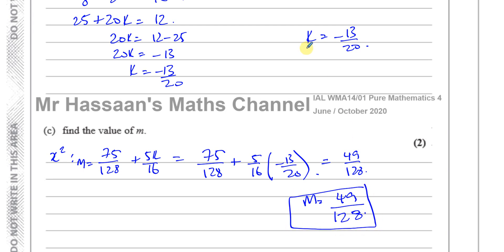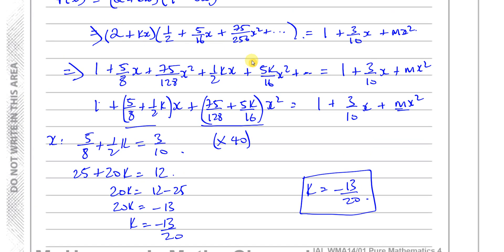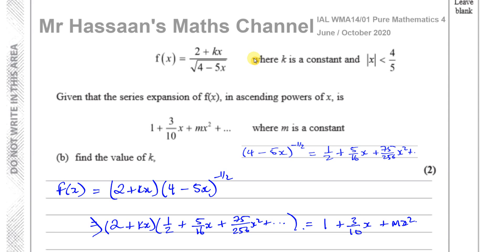And there we have the answers to parts B and C of this binomial expansion question from the June-October 2020 paper. Click the link for other questions from the same paper, or the playlist link for P4 binomial expansion. Subscribe using the icon on screen, and check the description for links to A-level M1, S1, P1, P2, P3, and IGCSE material. Thank you for watching.